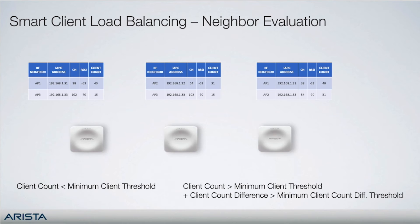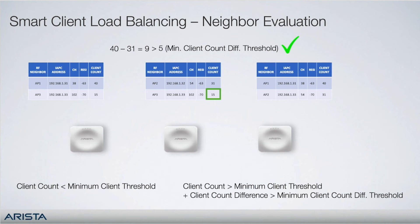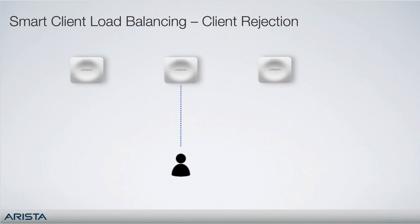In this example, for AP1 in the middle, AP3 is an acceptable alternative because its client count is less than the minimum client threshold. AP2 is also acceptable because while its client count is greater than the minimum client threshold, the client count difference between AP2 and AP1 is greater than the minimum client count difference threshold. If at least half of the neighboring APs in the RF neighbor table are acceptable alternatives, the AP will begin rejecting associations with 802.11 status code 17 — association denied because the AP is unable to handle additional associations — encouraging clients to join other APs.